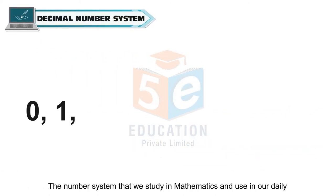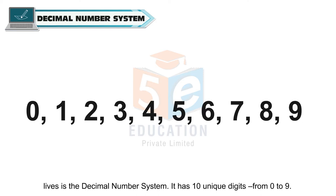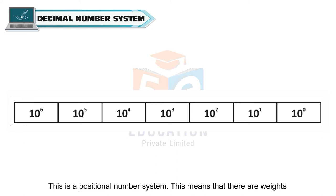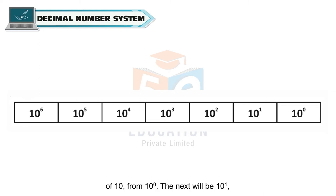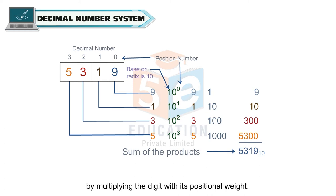The number system that we study in mathematics and use in our daily lives is the decimal number system. It has 10 unique digits from 0 to 9. The decimal system is the most common number system and is a positional number system. This means that there are weights associated with each position, according to the exponents or powers of 10 — from 10 to the power of 0, then 10 to the power of 1, then 10 to the power of 2, and so on. The value of every digit in a number in the decimal system is calculated by multiplying the digit with its positional weight.